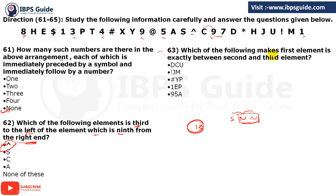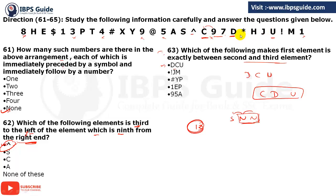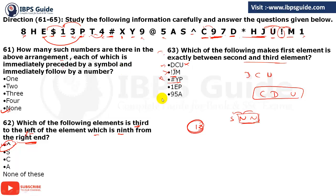Question 63: Which of the following makes the first element exactly between the second and third? We check each option. For D, C, U: D is not exactly between C and U because there are two elements on one side and three on the other. For the next option, J and M: one element between first and second but none between first and third — not our answer. For hash between Y and P: one element on one side, two on the other — not our answer. For 1, E, P: leaving one element, there is P; leaving one, there is E. So 1 is exactly between E and P. This is our answer.